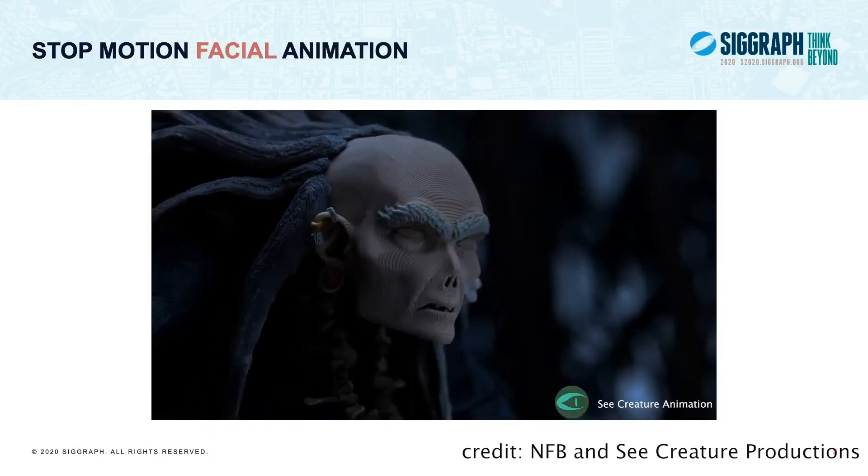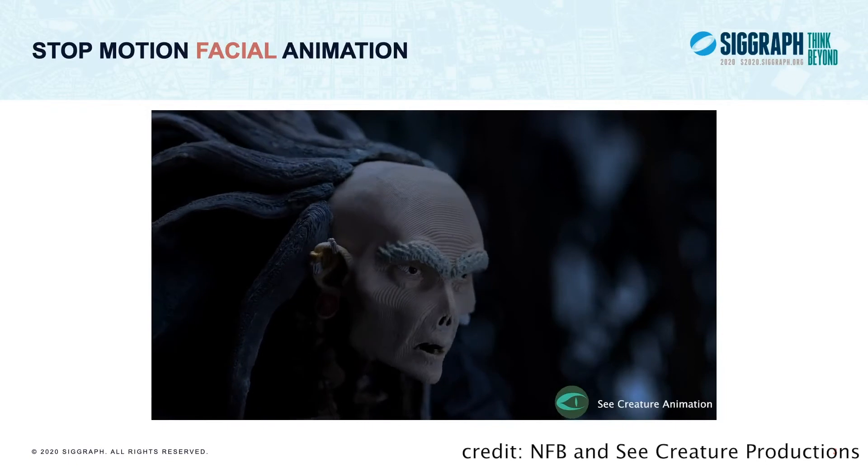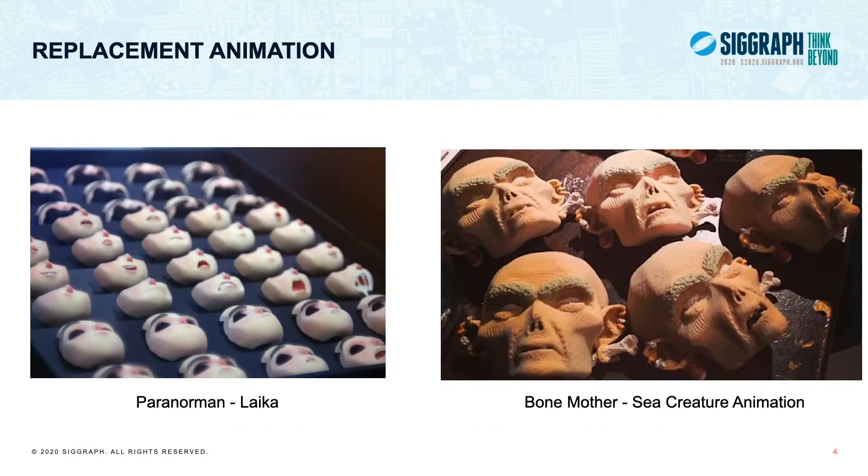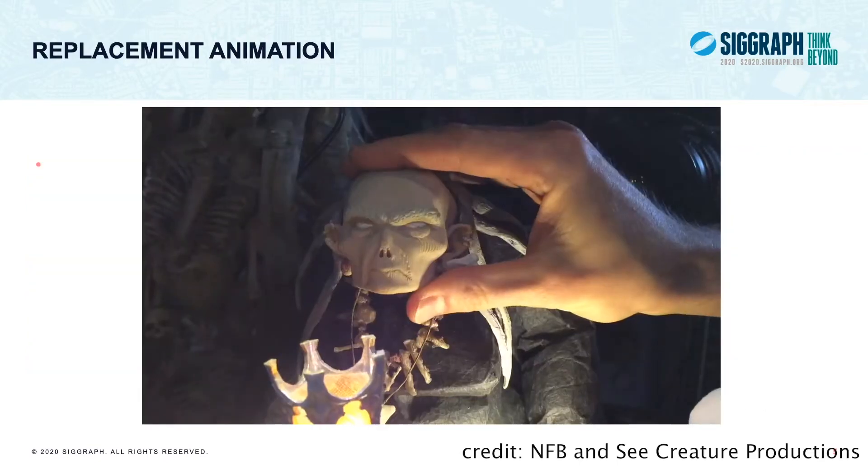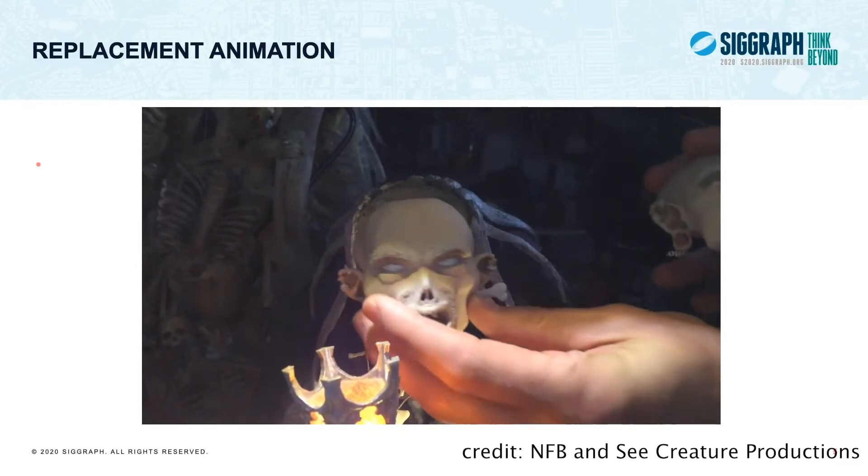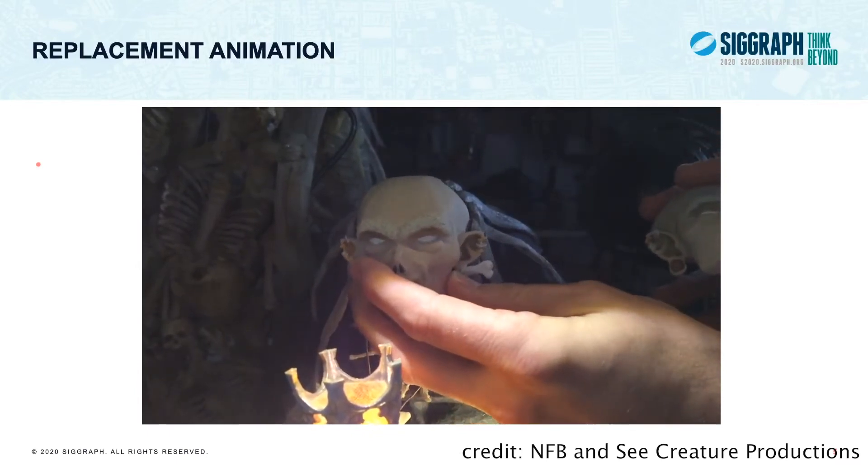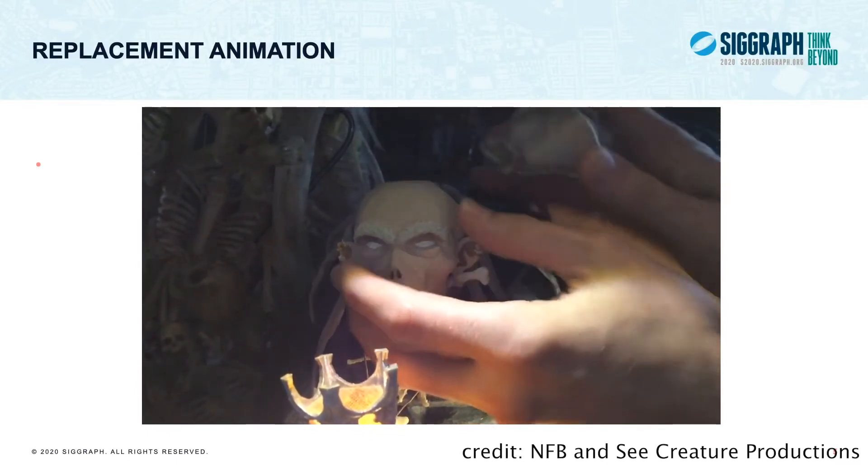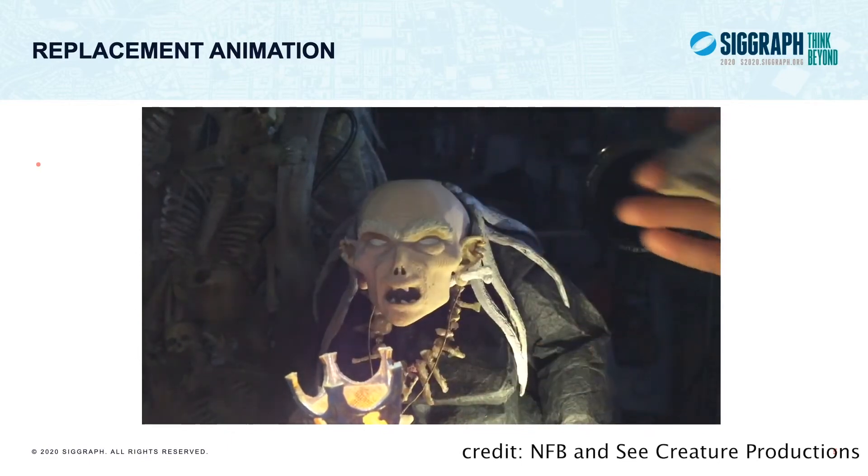However, the stop-motion animation of the face is a very challenging task. The current state-of-the-art solution is a technique called replacement animation, which involves the use of a 3D printed library of faces. That library is supposed to cover the expressive range of the character. During the recording process, the animator replaces the 3D printed faces on a frame-by-frame basis.